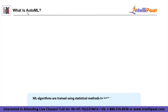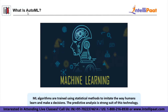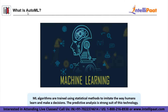Machine learning, a crucial field of data science, has also grown in popularity. ML algorithms are trained using statistical methods to imitate the way humans learn and make decisions. Machine learning is becoming increasingly useful in businesses of all sizes. The most popular examples include fraud detection, marketing agencies automatically targeting consumer groups, and customer care chatbots at banks.